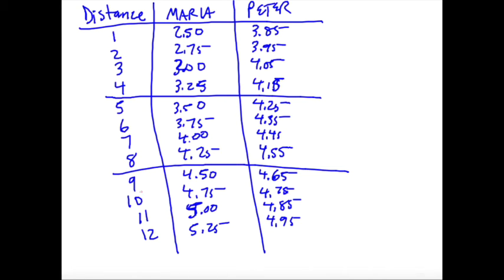Peter starts at $3.75 and does $0.10 per mile. So he'll be at $3.85 at the first mile. And then we add $0.10 each time. Okay, good. We don't have to go past this. At the tenth mile, they are charging the same amount.